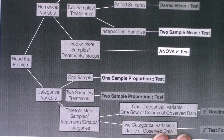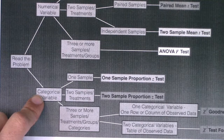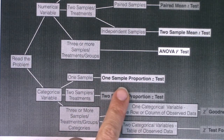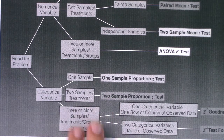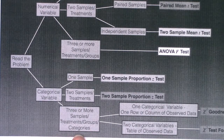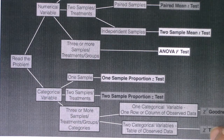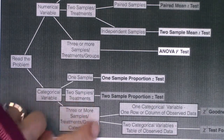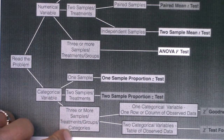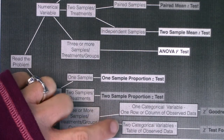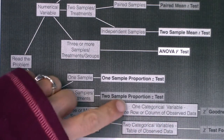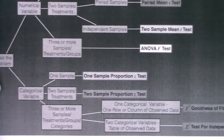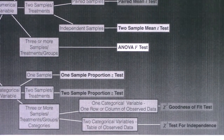On the bottom rung of the tree diagram, if you had categorical data with one sample, we saw that in Chapter 9 — the one sample proportion z-test. In Chapter 10, with two samples or two treatments, we did the two sample proportion z-test. Now we're going to be in the three or more samples, categories, or groups branch. We're going to decide which chi-squared hypothesis test to run. With three or more categories, you decide: did you have one categorical variable or two? Or equivalently, did you have one row or column of observed data, or a table of observed data?